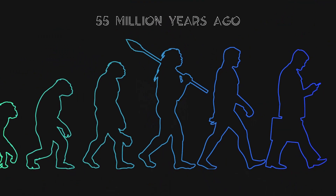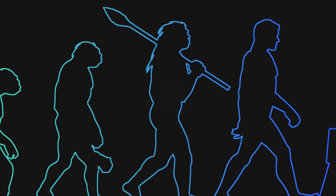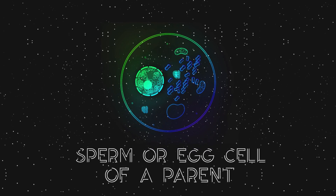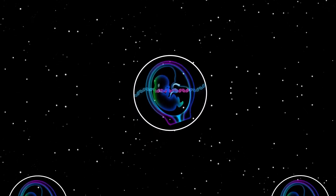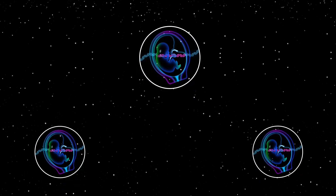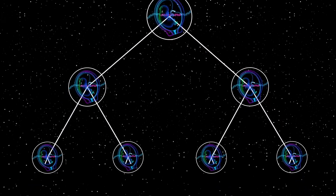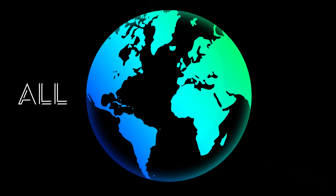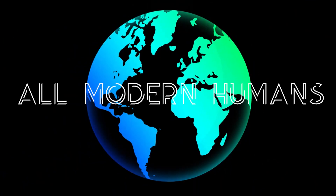This exact scenario happened millions of years ago to one of our ancestors, but Herb W didn't slip its DNA into some regular ear or foot cell — it infected the sperm or egg cell of a parent. The viral gene was passed on to every cell of that parent's offspring, and eventually it made its way into the DNA of all modern humans.